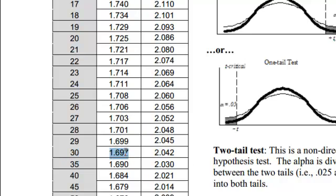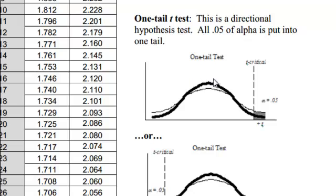So, for this one-tail t-test, our t-critical, 1.697. If that sample mean is 1.697 or more standard errors above the population mean, we will reject the null hypothesis.